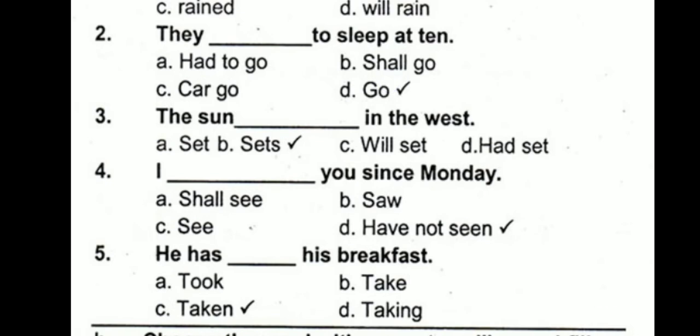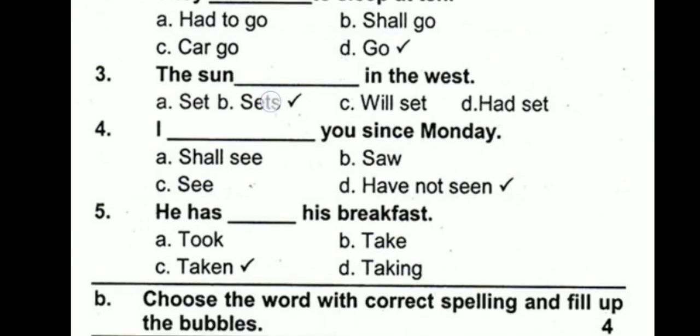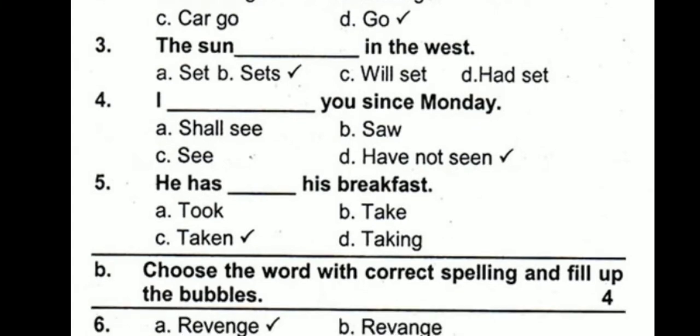'The sun dash in the west.' The sun sets in the west. This is again a present indefinite tense, also called simple present tense. We add S or ES if the subject is a singular third person, and 'the sun' is a singular third person, so 'sets' is correct.